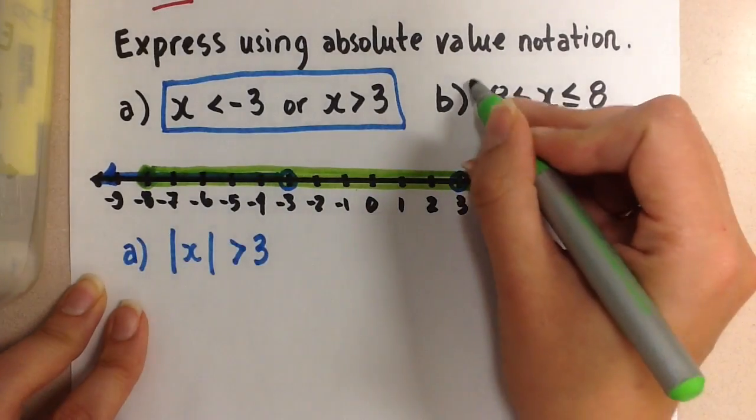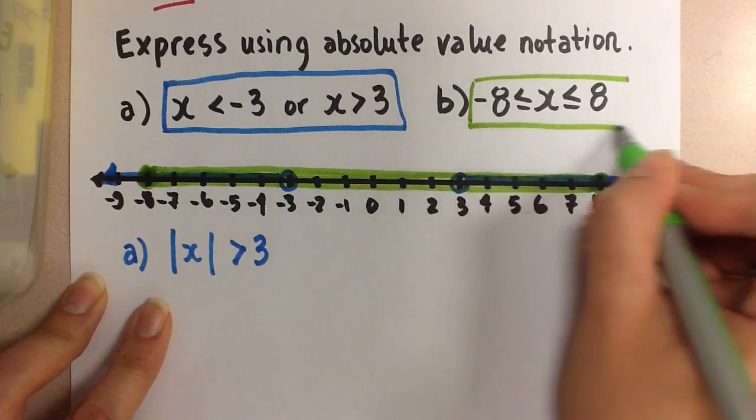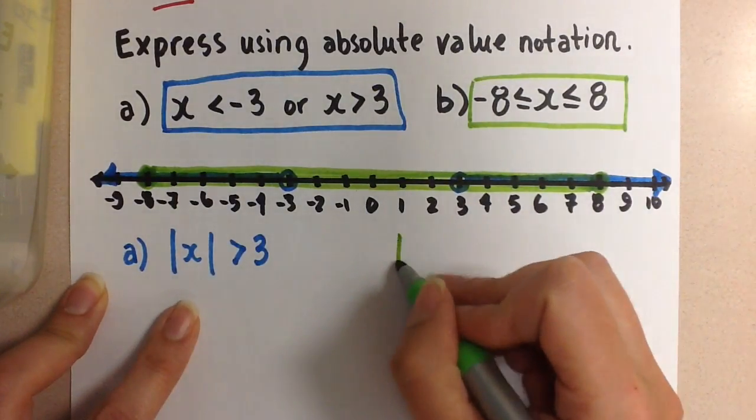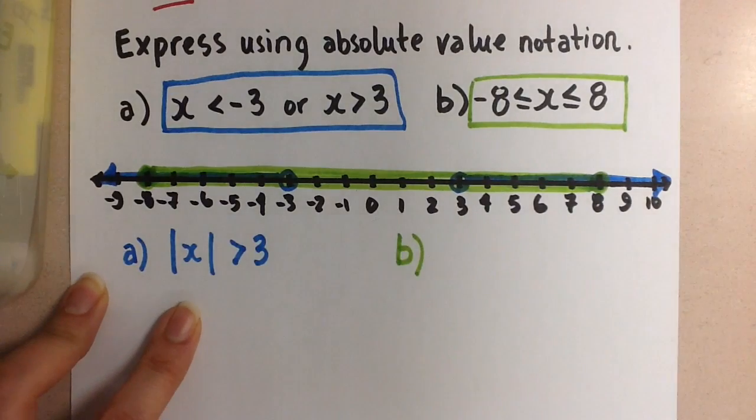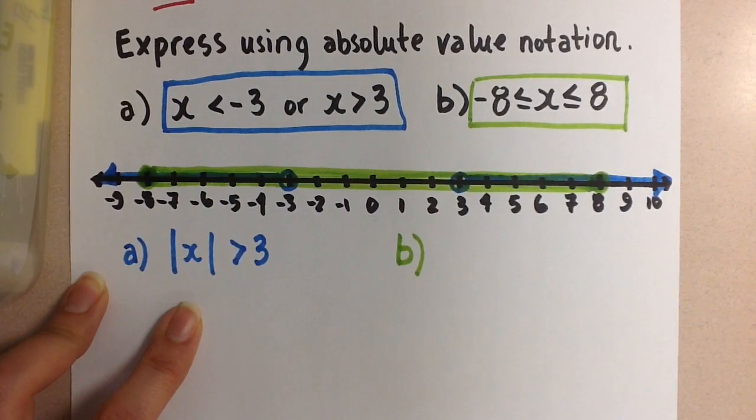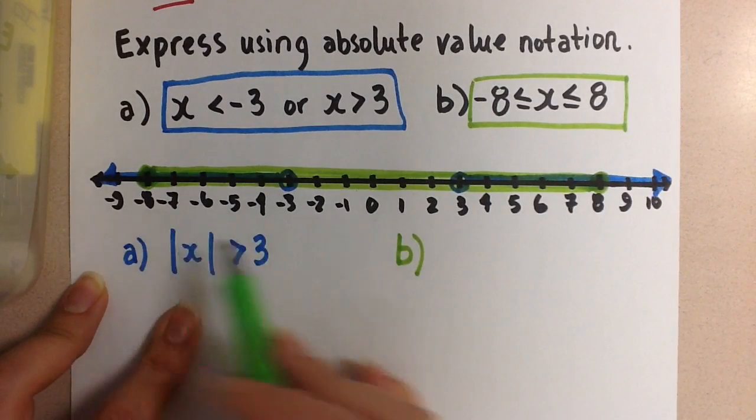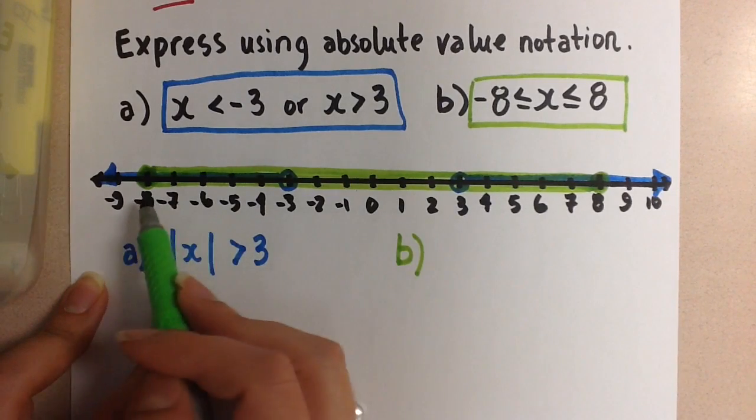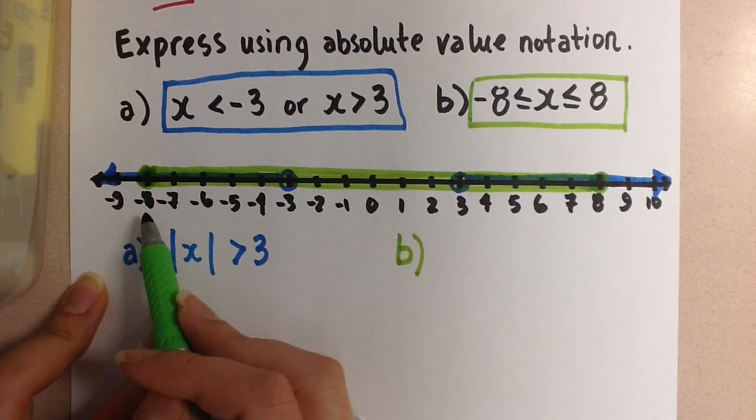So that is what this inequality looks like graphed on the number line. To change it then to absolute value notation, we have to think about the value of the numbers when we remove the sign. So we look at the magnitude only of these numbers. And if you look at that we have the numbers 0 through 8 on this side and 0 through 8 on this side as well.